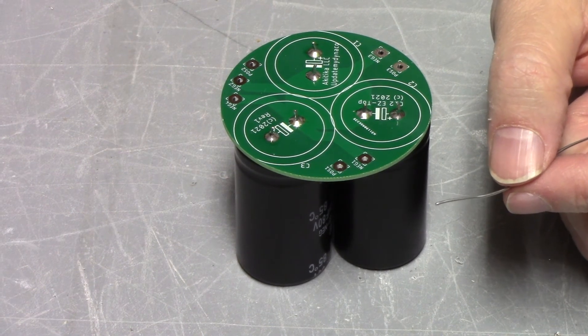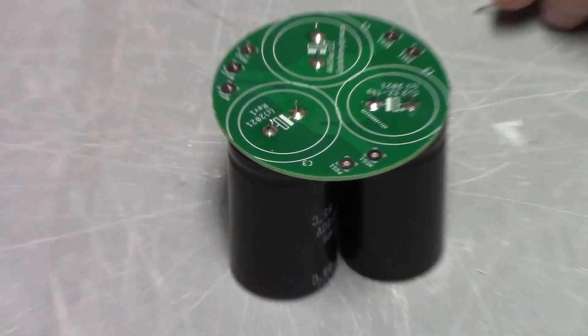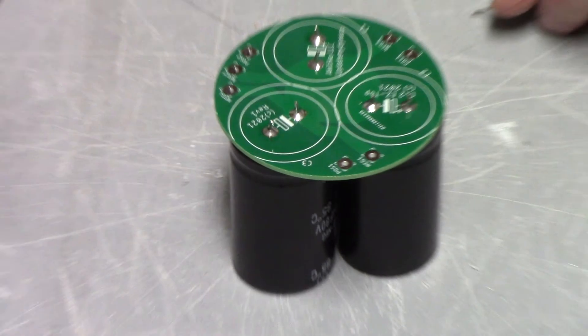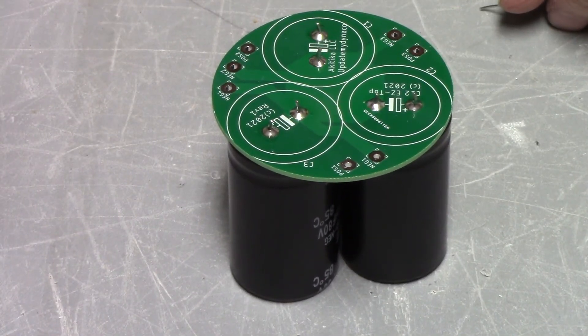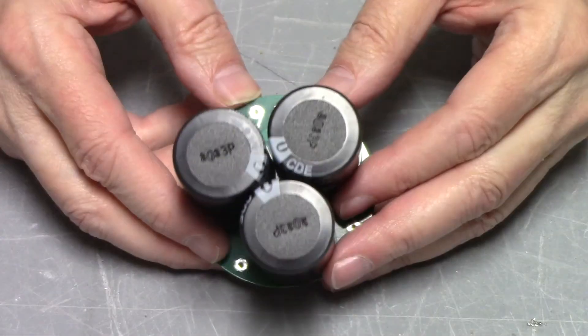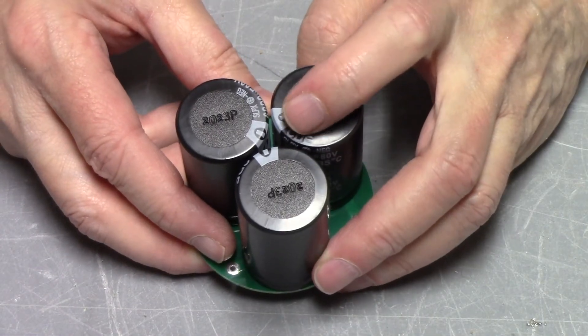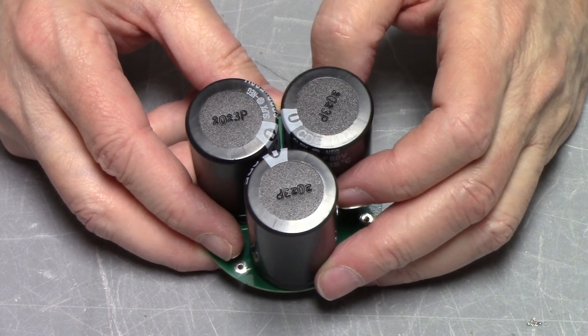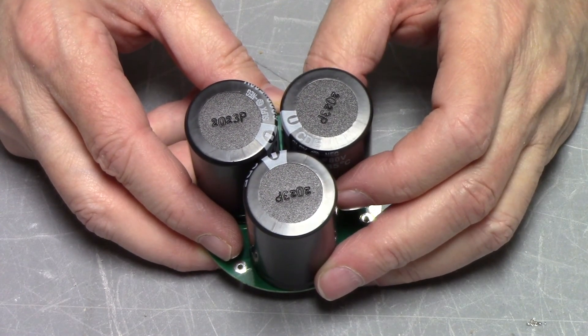And then if you can do a ridiculous close up on that, you should see that all of those joints, all six of them look smooth and shiny and they kind of wick their way up the leads. And now that we're done is a great time to double check. All three minus signs are at the center. And we know we've gotten the polarities correct.